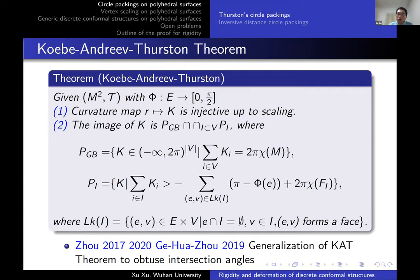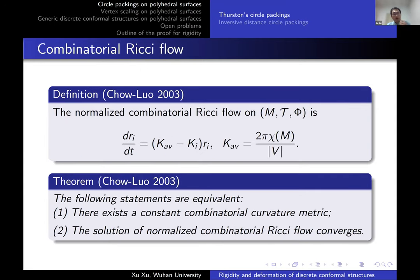Recently, Zhou and Guo-Zhou have generalized the KAT theorem to obtuse intersection angles. An effective way to find discrete metrics with prescribed combinatorial curvature is the combinatorial Ricci flow, introduced by Luo. They defined it as an analog of the smooth Ricci flow on surfaces.